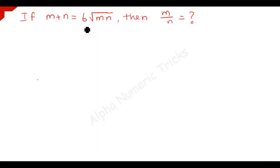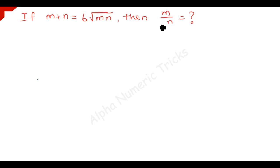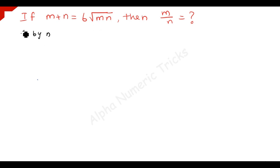Now we are going to solve this nice Olympiad problem. If m plus n is equal to 6 times square root of m times n, then we have to find out m over n. Since we need to find out this value, divide throughout this equation by n.